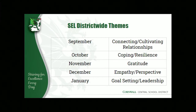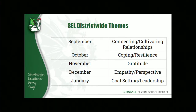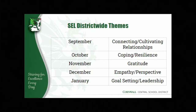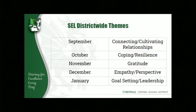Some themes align with national campaigns for the month. Coping and resiliency was our way of saying since we're back, we're going to have some challenges and difficulties — instead of taking away the discomfort, we're going to have students work through them head-on because that's a life skill. For September, connecting and cultivating relationships was our way of welcoming everybody back and doing a deeper dive to get to know people.